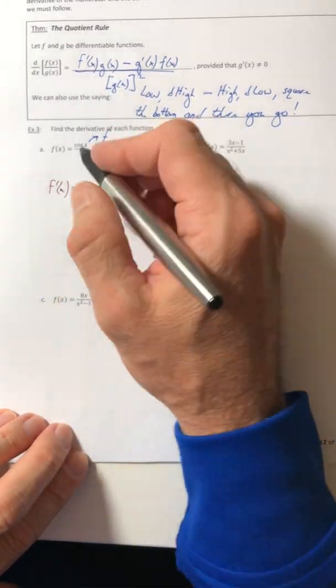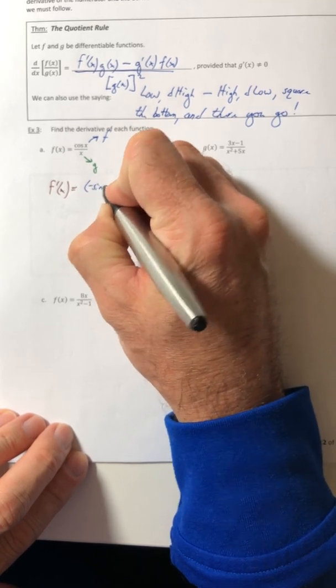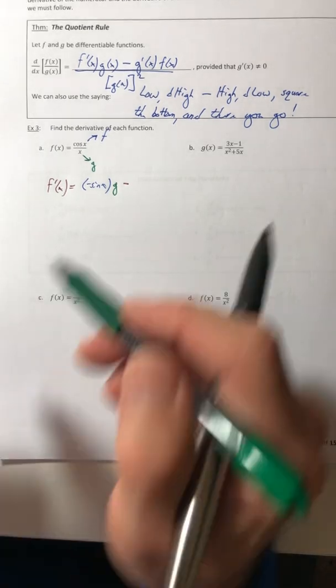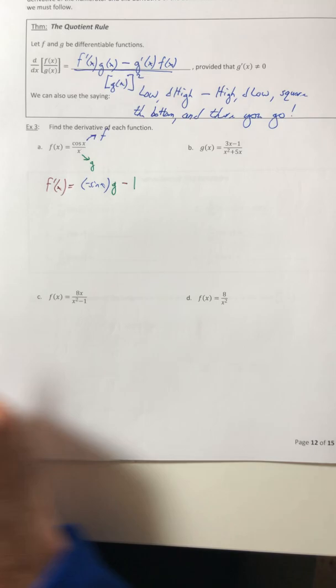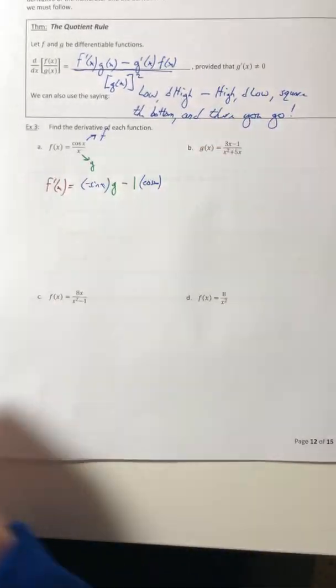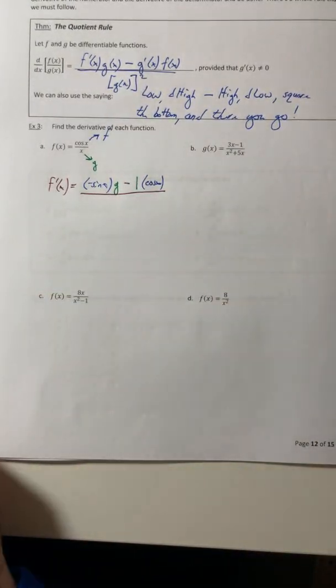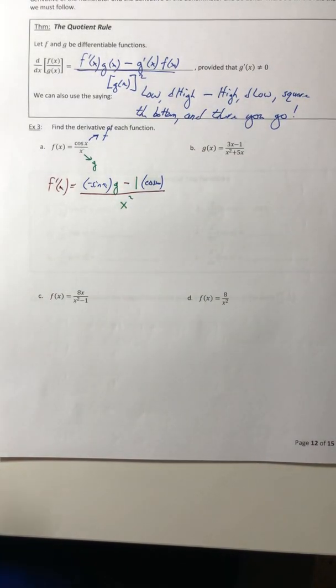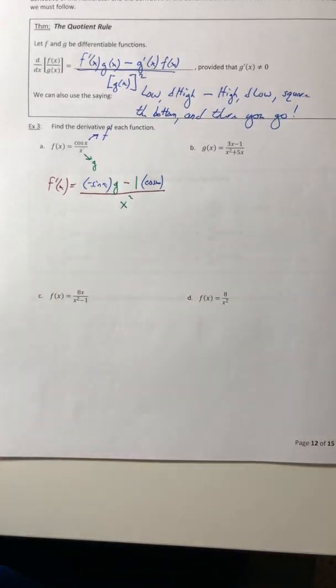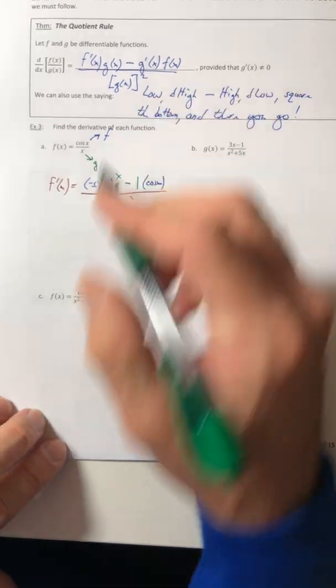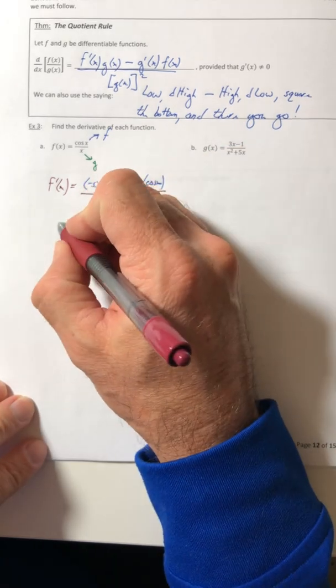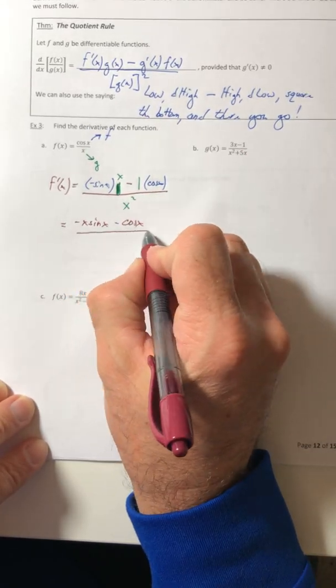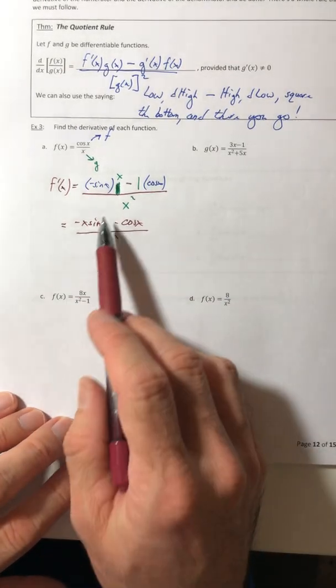Okay. So F prime. So the derivative of the top, the negative sine, times the bottom and then minus. Now it's going to switch. So the derivative of the bottom. So that would be one times the top just times cosine. And then all over now take your denominator, the original denominator and square it. So just X squared. And this one, whoops. Wow. Can't believe I did that. That shouldn't be a G. That should be an X. So this one, we just got to clean it up. So a negative X sine X minus cosine of X all over X squared. Okay. So that's how the formula goes.